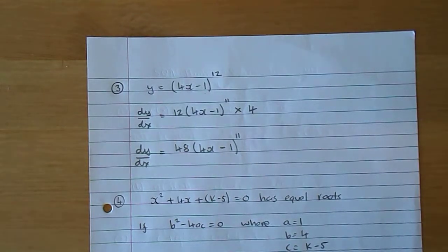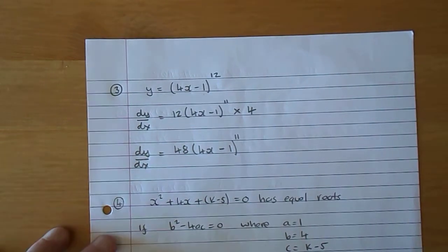Question 3: you're given y equals (4x - 1) to the power of 12, find dy by dx.